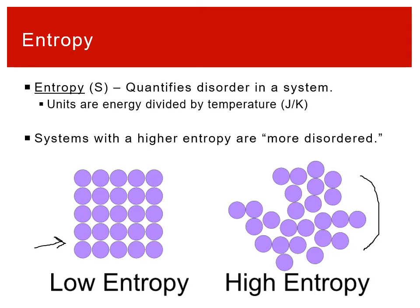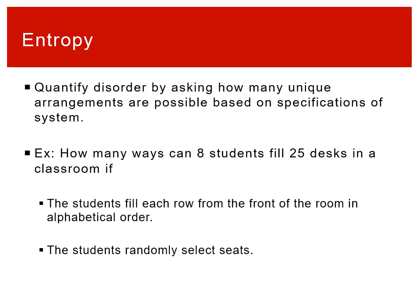The goal of entropy is to quantify — to assign a number to — how disordered these systems are. The arrangement on the left where the circles are in a nice pattern has a very low entropy, whereas the one on the right where the dots are randomly jumbled together would have a high entropy.